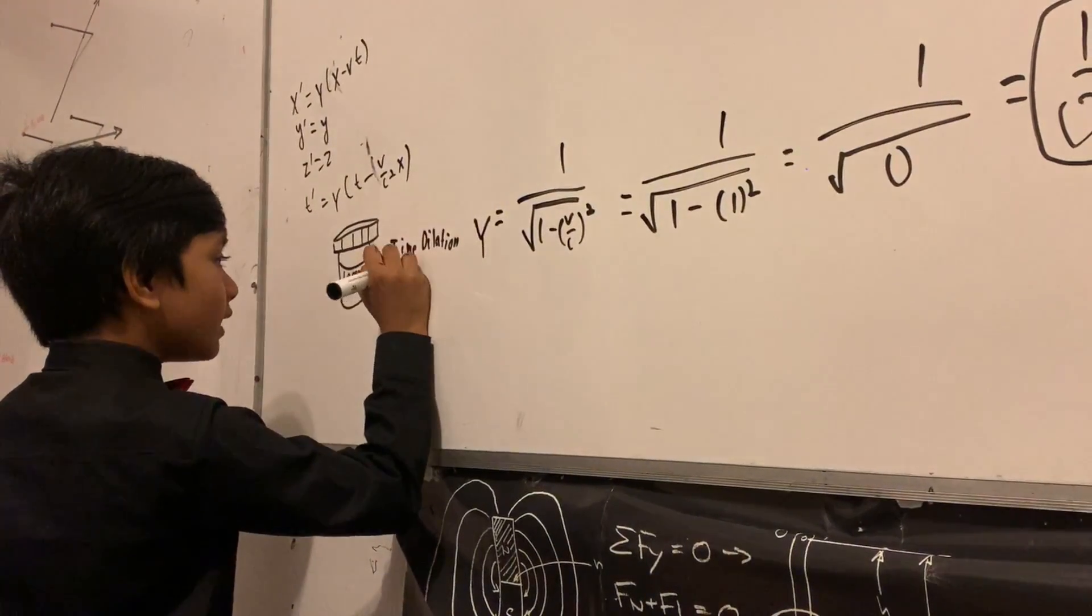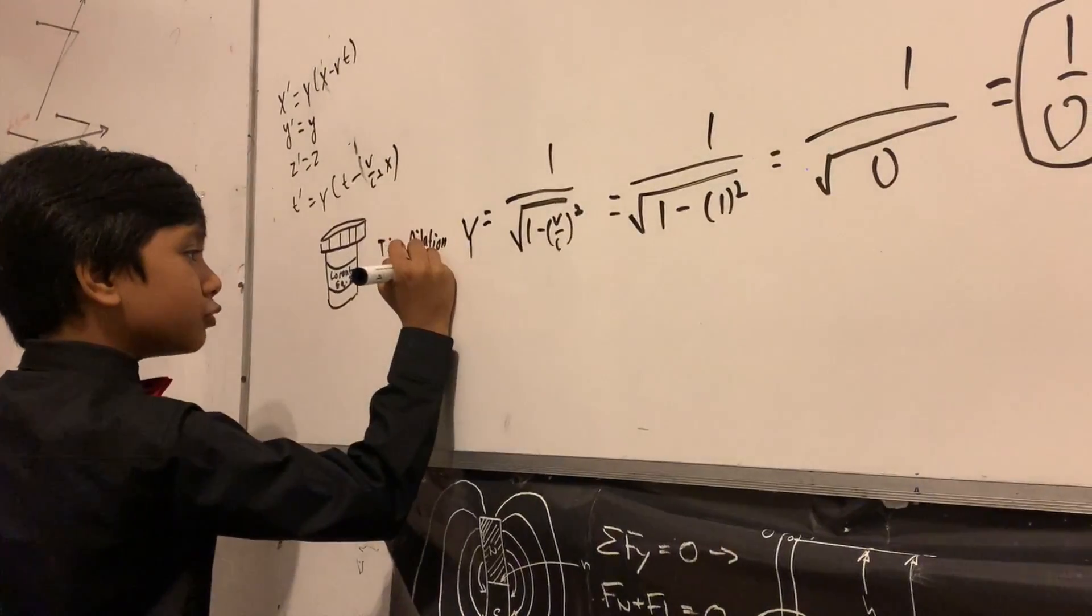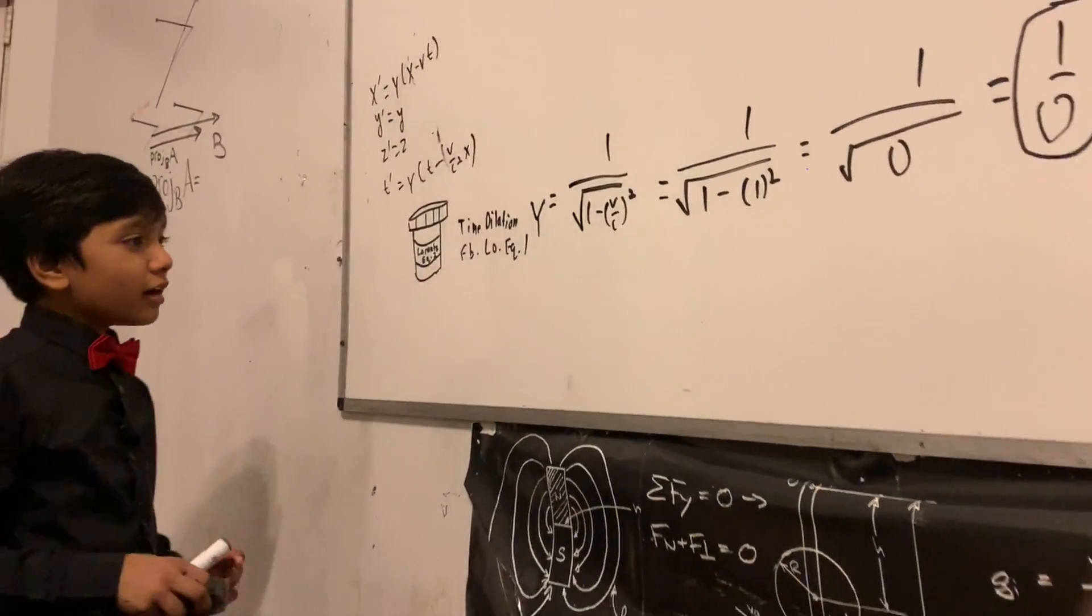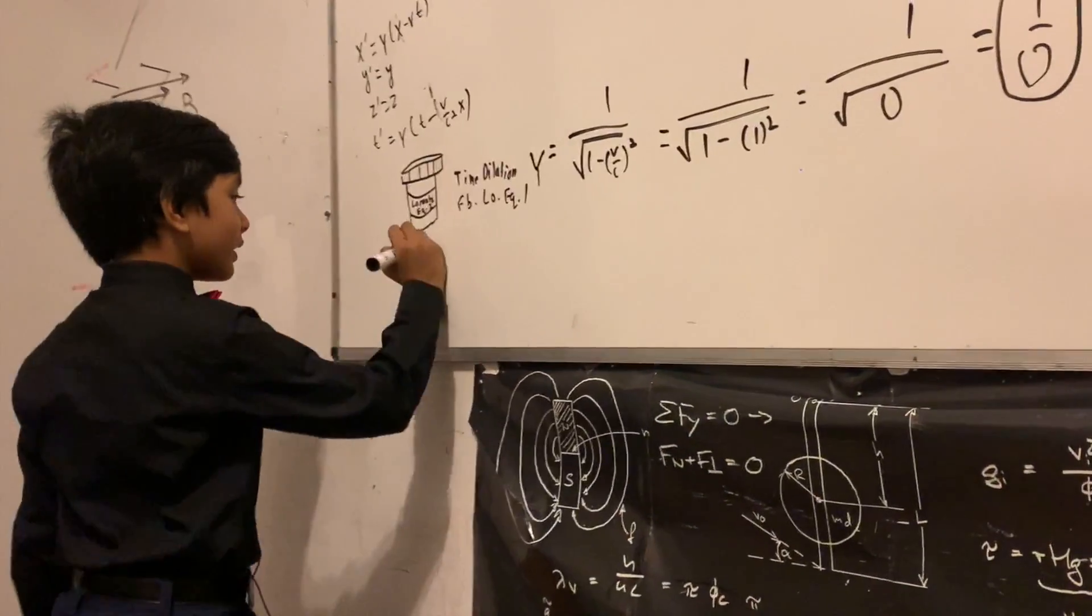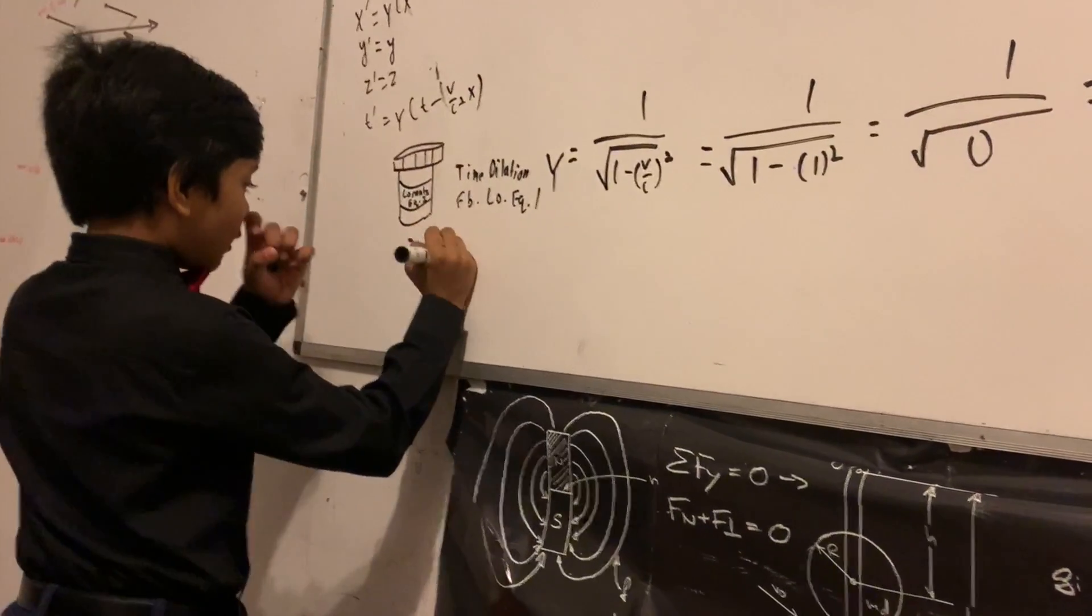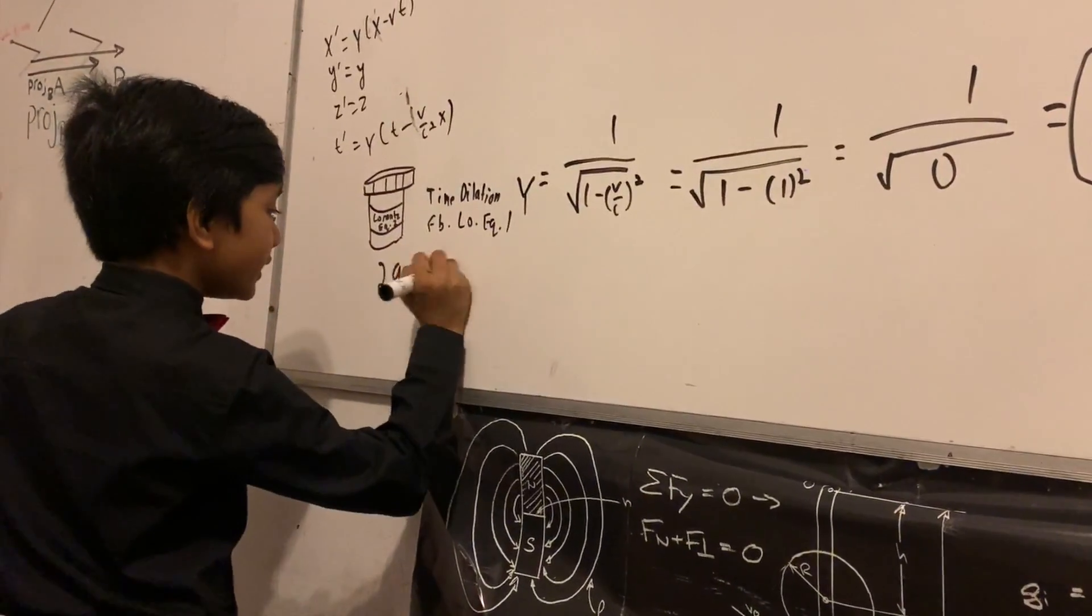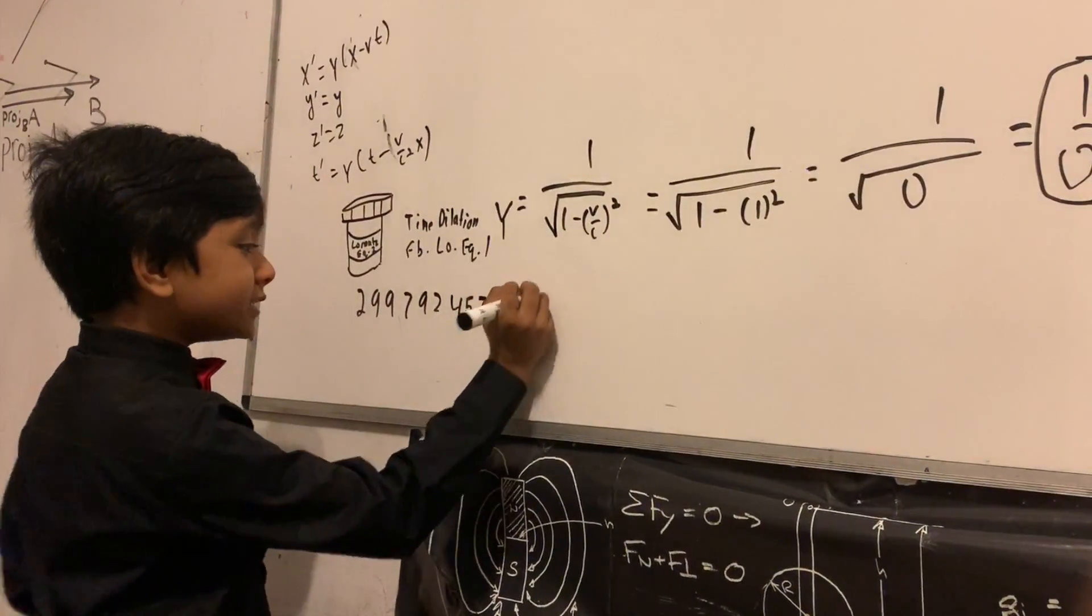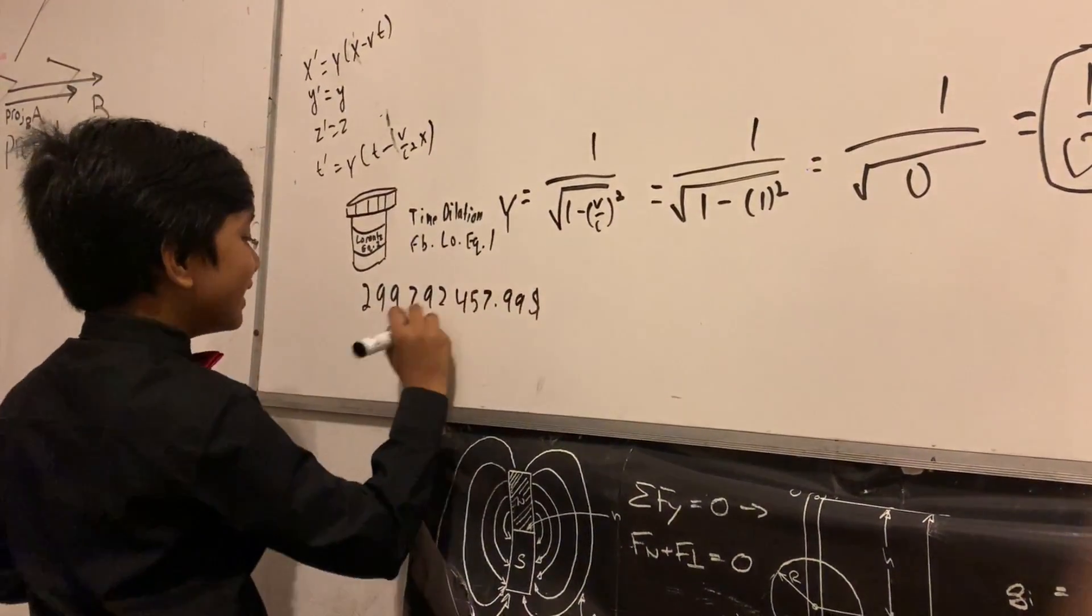Now there's only two side effects: time dilation and flashbacks to the Lorentz equations one. Now it's still the same price of awesome: $299,792,457.99. Buy now!